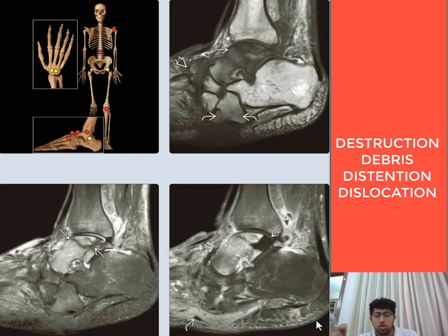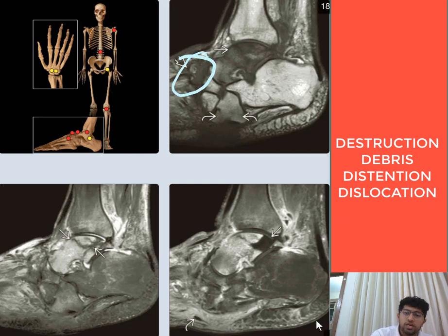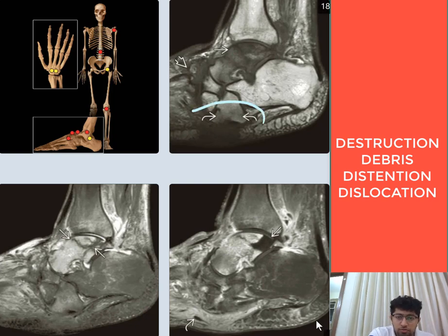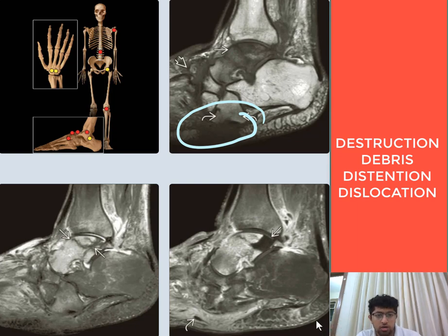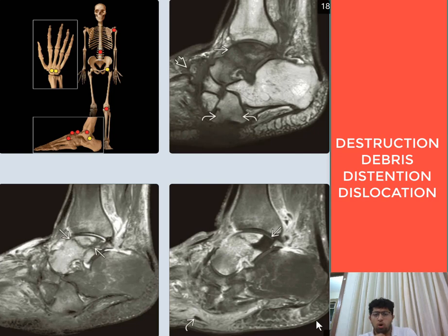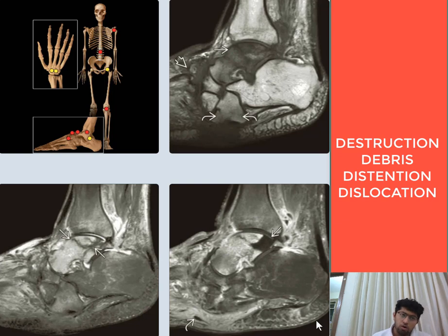In this image, the navicular and cuneiform area show hypointense areas involving the bone. The plantar soft tissue is also showing hypointensity, and the adjacent cuboid bone is also showing some hypointense areas. Such confluent hypointensities on a T1-weighted image are classical for osteomyelitis.